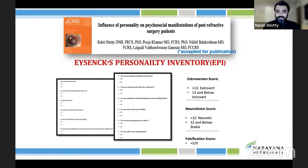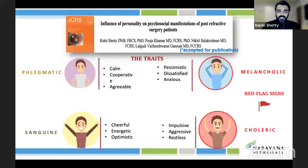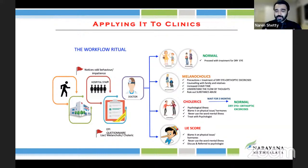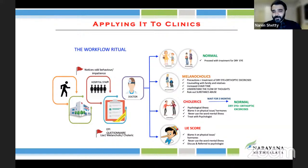Another way to ensure happy patients is to give a questionnaire before surgery. This helps you categorize what kind of personality the patient is. If normal, simply go ahead. If it's a borderline case, sit with the patient and make sure the attender — a friend or family member — is present during counseling so they understand and can help if the patient has psychological issues. If there are red flags, refer the patient to a psychologist, wait three months for things to settle, and then plan the surgery.